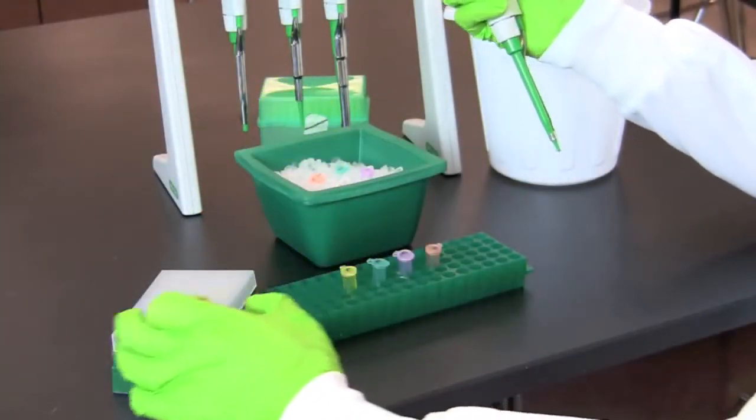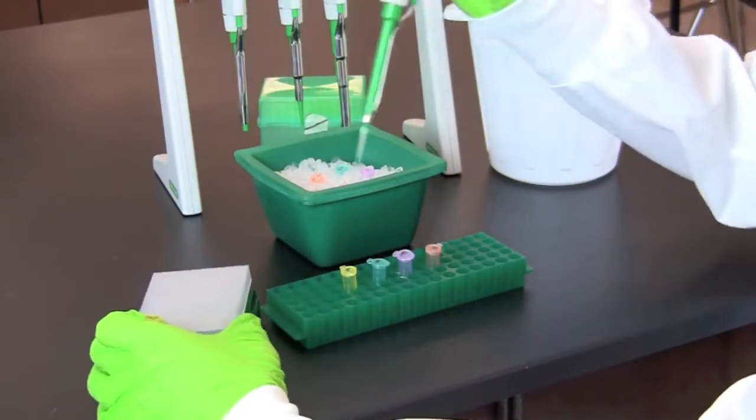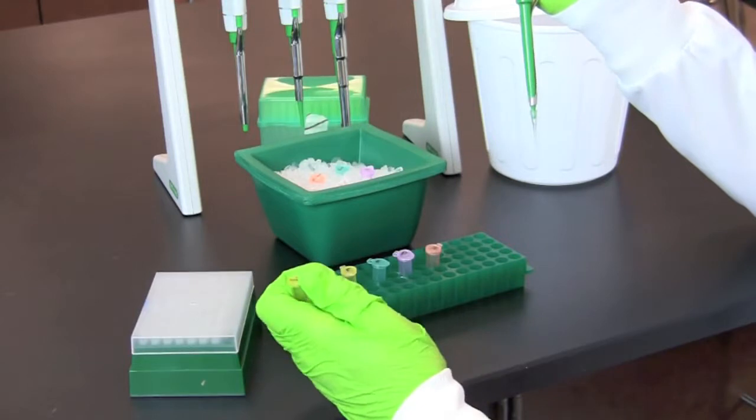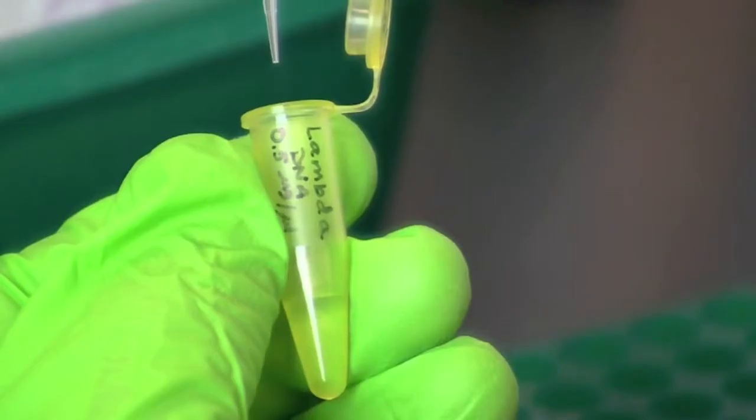Start by loading each of the colored tubes with lambda DNA. Using a fresh tip, transfer four microliters of lambda DNA from your stock tube to the color-coded L tube.